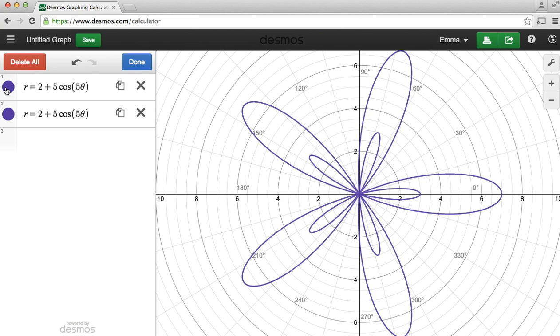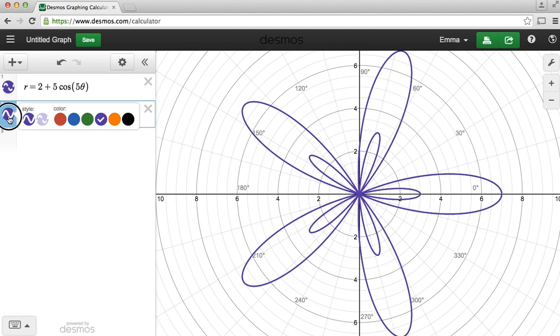And we're going to change our first equation so it's a dotted line. So I click on the purple circle and change the style to dotted. And then I want to change my second equation to a different color. So I click and hold and I'm going to change the color to orange so it really stands out.